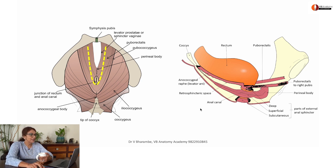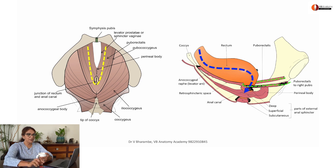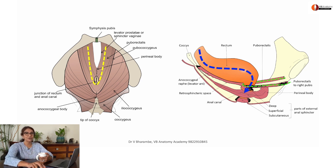I want you to note this. See, here's the rectum — it's moving forward until the sling of puborectalis pulls it forwards, and that's why your rectum has got an S-shaped curve to it.